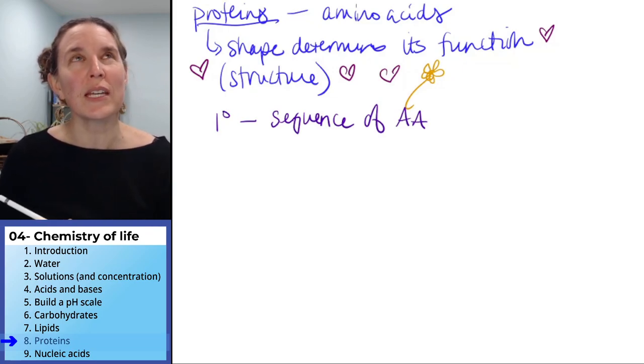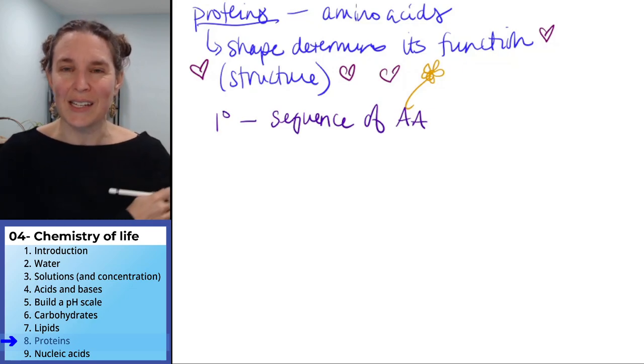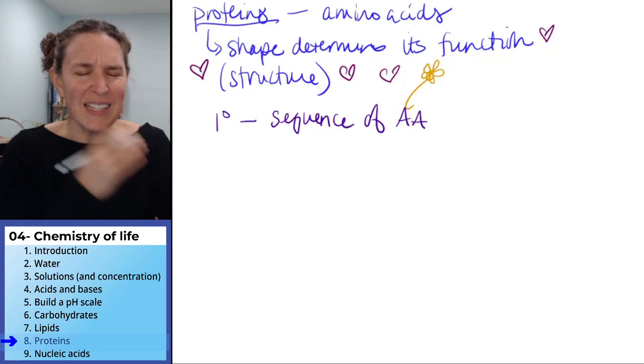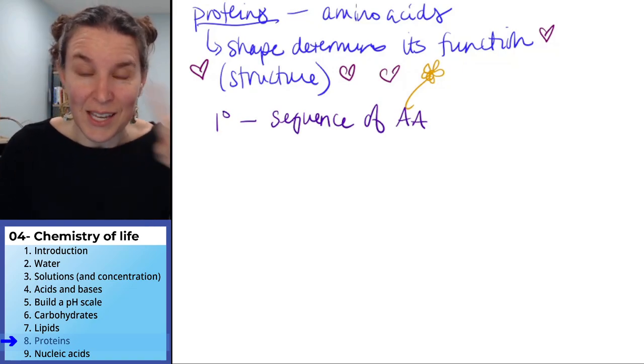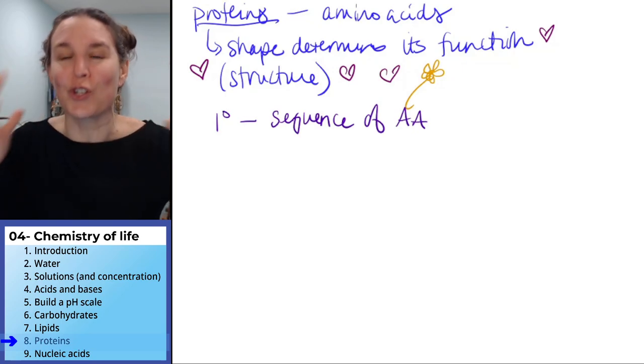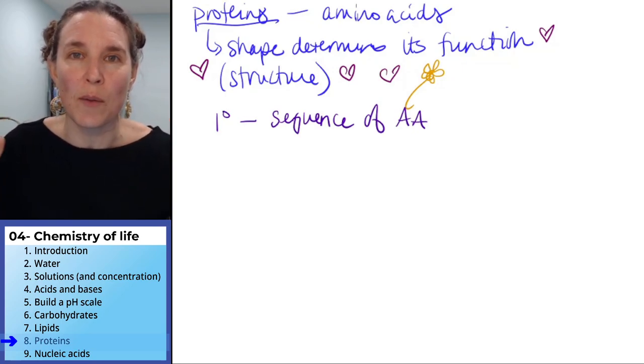Some protein, like the biggest protein is a protein called titin and it's in your skeletal muscle organs. And it has like 30,000 amino acids in one protein. Like it's absurd how huge that protein is.